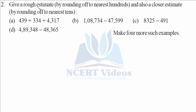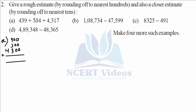Question two asks us to give a rough estimate by rounding off to the nearest hundreds, and also a closer estimate by rounding off to the nearest tens. We will do this in two steps. First, rounding to nearest hundreds: 439 is closer to 400, 334 rounds to 300, and 4317 rounds to 4300.